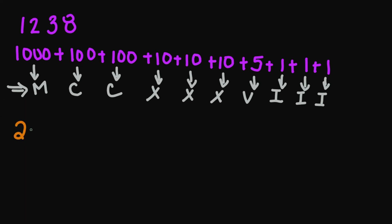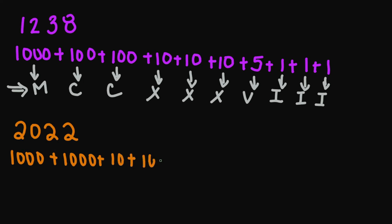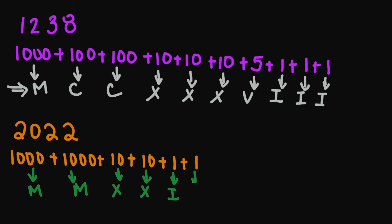What about the number two thousand twenty-two? I'm going to break this up into one thousand plus one thousand plus ten plus ten plus one plus one. One thousand is M, one thousand is M again, ten is X, ten is X, and then one is I, and one is I again. So your final answer is MMXXII.